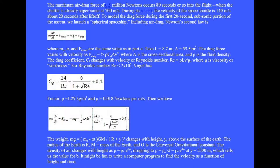Including air drag, Newton's second law is m dv dt equals the thrust minus the weight minus the air drag, where m0, alpha, and the thrust are the same values as in part c. Take length l equals 8.7 meters, cross sectional area A equals 59.5 square meters. The drag force varies with velocity as one half rho cd A v squared.